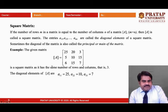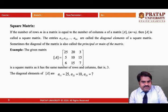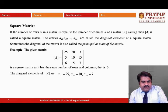Now, the square matrix. If the number of rows equals the number of columns, the matrix is called a square matrix. For example, matrix A with three rows and three columns is a square matrix. The entries A11, A22, up to Ann are called the diagonal elements of the square matrix, also called the principal diagonal or main diagonal. For this matrix, the diagonal elements are 25, 10, and 7.